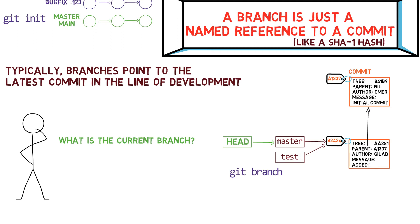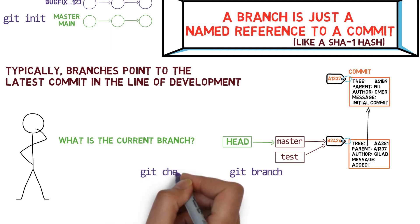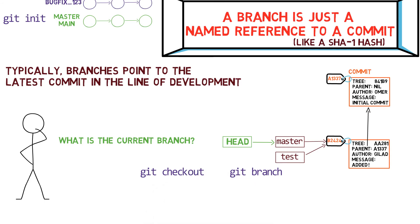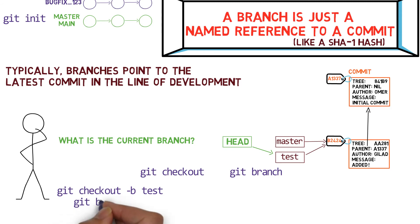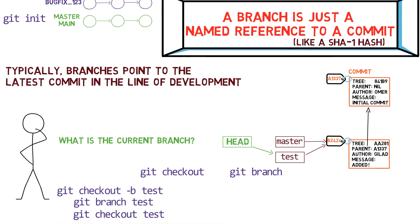To switch the active branch to be test, we can use the command git checkout test. I believe you can already guess what this command actually does — it just changes HEAD to point to test. By the way, we could also use git checkout -b test, which is the equivalent of running git branch test to create the branch, and then git checkout test to move HEAD to point to the new branch.